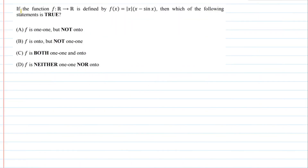Hello students, hope you are doing well. Let me explain this question to you. The question says: if the function f defined from ℝ to ℝ is defined by f(x) = |x|·x − sin(x), then which of the following statements is true? Option A: f is 1-1 but not onto. Option B: f is onto but not 1-1. Option C: f is both 1-1 and onto. Option D: f is neither 1-1 nor onto.